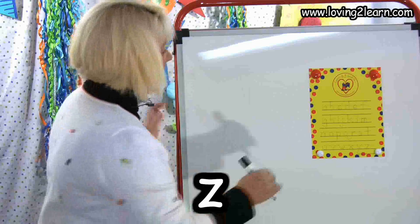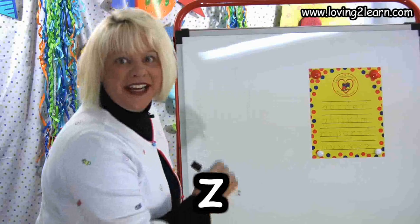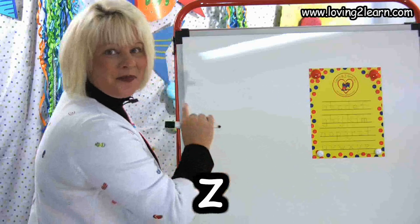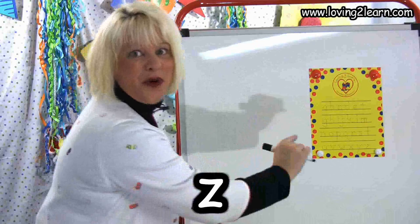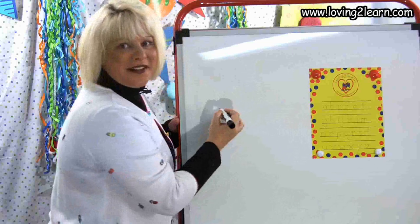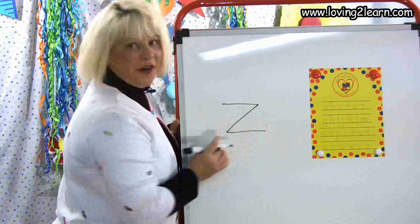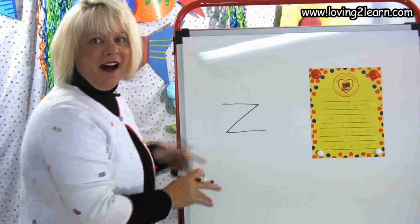The last letter is the letter Z. We go straight line over, slanted line down, straight line over. Let's do it in the air: straight line over, slanted line down, straight line over. We'll do it on the whiteboard: straight line over, slanted line down, straight line over. There is the letter Z. You just wrote the whole alphabet with me! You are doing a super fantastic job. Keep up the great work. See you later, alligator!